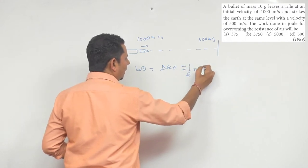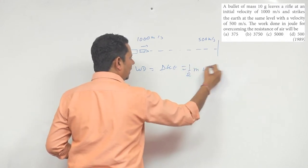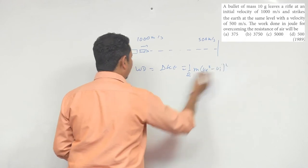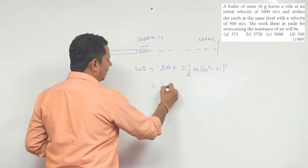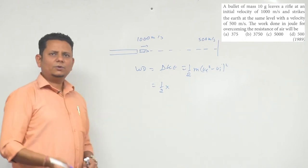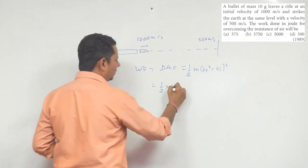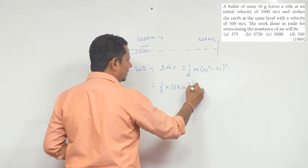This will be equal to half times mass times (v final squared minus v initial squared). So this will be half multiplied by the mass of the bullet, 10 grams, which is 10 × 10^-3 kg.